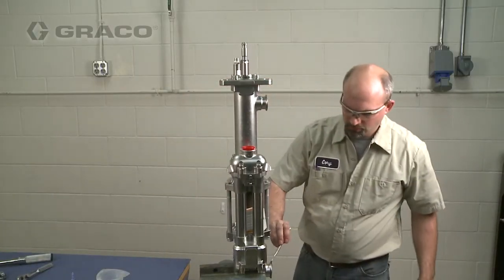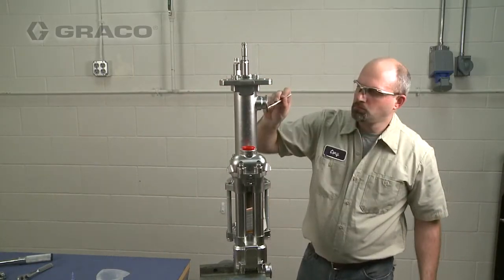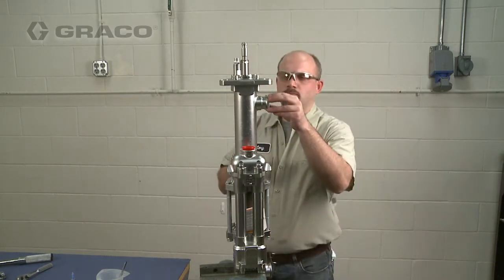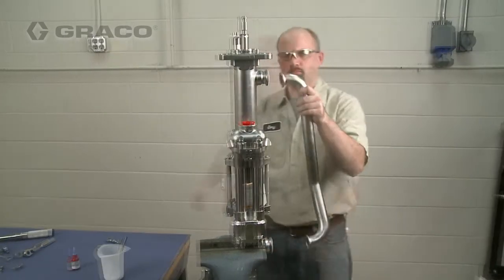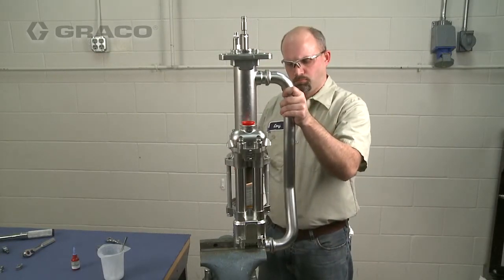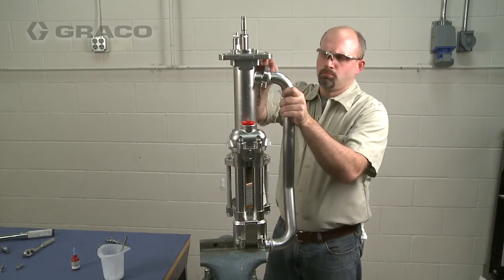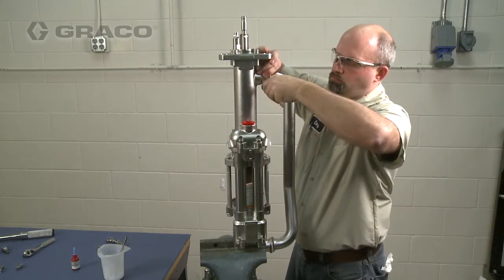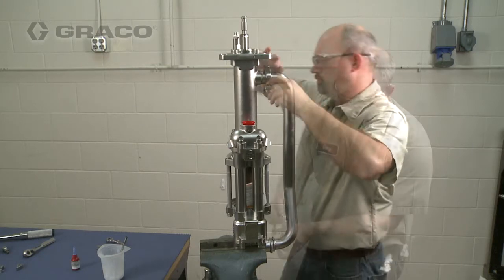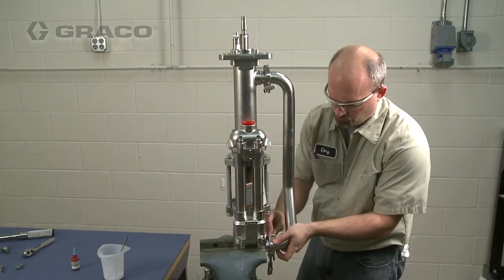Lubricate the side manifold seals and then install the side manifold. Using clamps, secure the side manifold to the bellows chamber and inlet check manifold. Tighten and torque the clamps to 15 to 20 foot pounds.